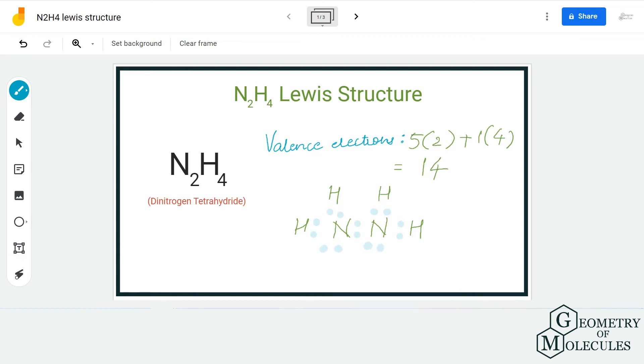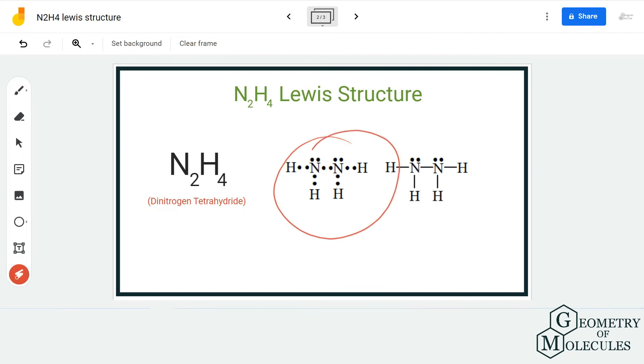Doing that, we will have a complete octet for N2H4. As you can see, each hydrogen atom has two valence electrons in its outermost shell, which is the most it needs to have a complete outermost shell. So hydrogen's outermost shell is now full, and even nitrogen atoms have eight valence electrons in their outer shell, and hence they have a complete octet.